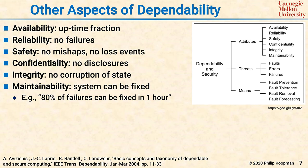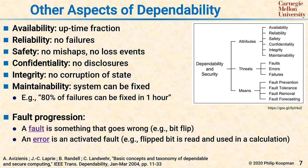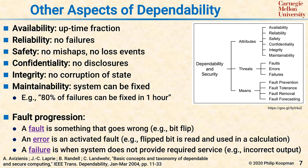Also in this paper is a definitive definition of a fault progression. A fault is something that goes wrong — for example, a bit flips in memory. An error is an activated fault: if that flipped bit is read and used in a calculation, that's an error — though not all faults are activated, so not all faults progress to being errors. Once you have an error, it might or might not result in a bad outcome depending on what happens. A failure is when the system does not provide required service, such as delivering an incorrect primary output. In summary: a fault goes wrong and if activated results in an error (a computational intermediate result issue), which may or may not eventually result in a system failure where the system misbehaves and does not provide the required service.